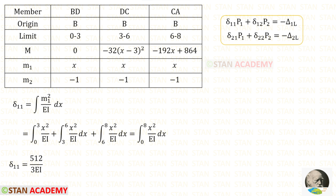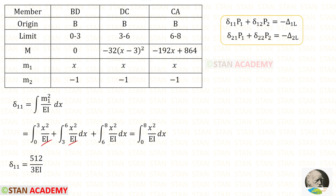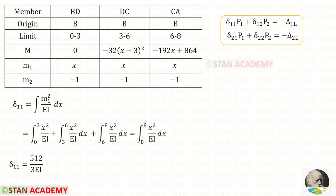Now let us find delta 11 using the formula: integration of M1 squared upon EI dx. Since M1 is the same for all members and EI is constant, we can apply a shortcut and use a single integration with the limit 0 to 8, giving delta 11 = 512 upon 3 EI.